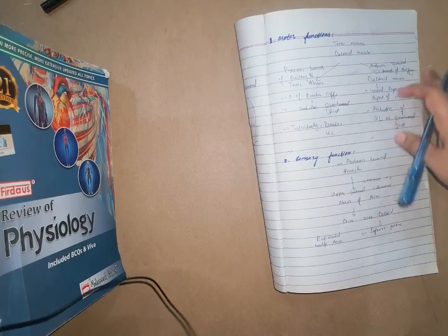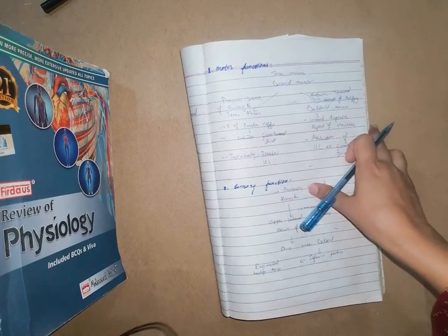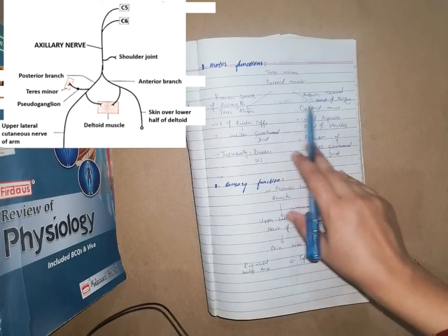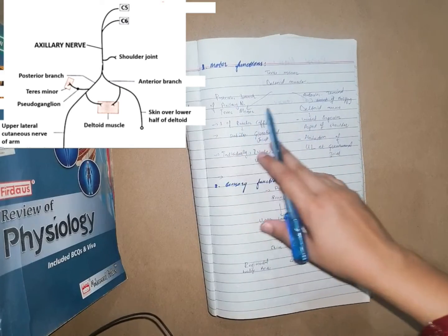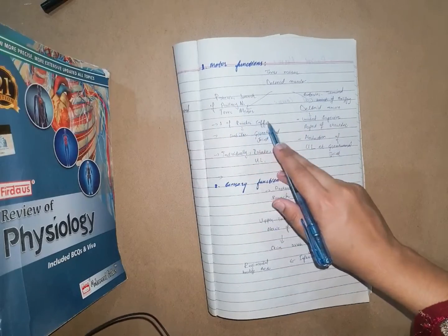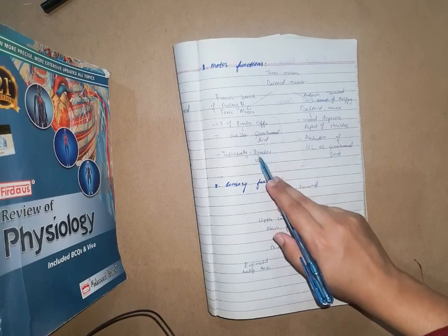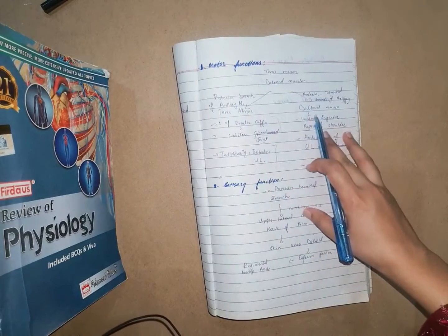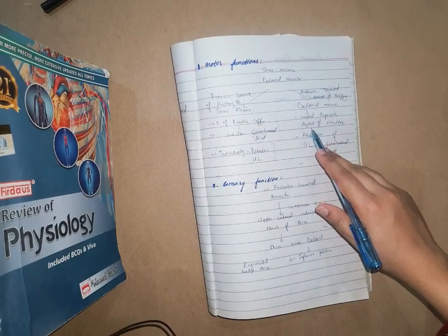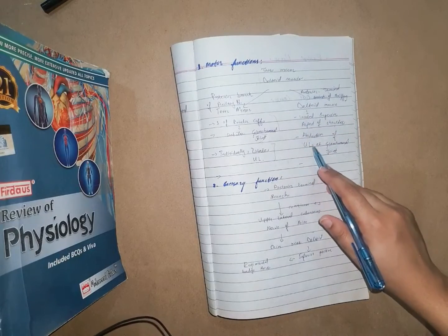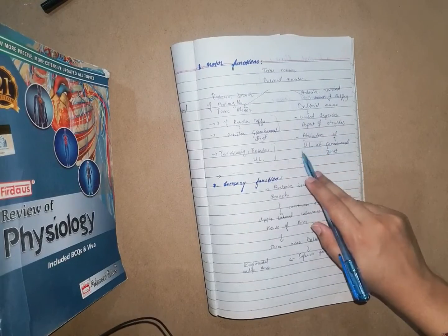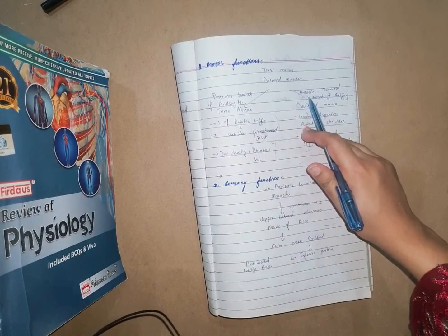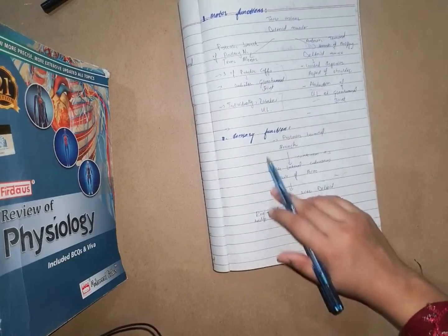The motor functions of the axillary nerve involve two muscles: the teres minor and the deltoid. The teres minor is one of the rotator cuff muscles which stabilizes the glenohumeral joint and laterally rotates the upper limb. The deltoid muscle is located in the superior aspect of the shoulder, and its motor function is abduction of the upper limb at the glenohumeral joint, innervated by the anterior terminal branch of the axillary nerve.